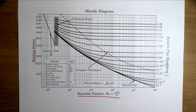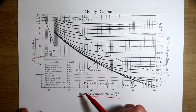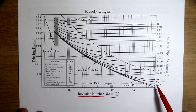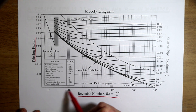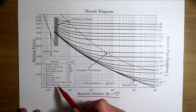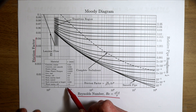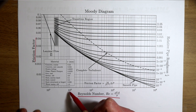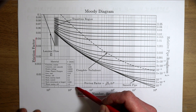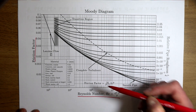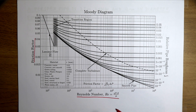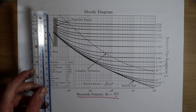The axes of the Moody diagram are logarithmic, so for every major step we jump up an order of magnitude: 1,000, 10,000, 100,000, a million, and so on. In between major steps we go 1,000, 2,000, 3,000 up to 10,000, then 10,000, 20,000, 30,000 up to 100,000, and so on. If you're unsure about how to use logarithmic graphs, I'd recommend looking that up before attempting this procedure.